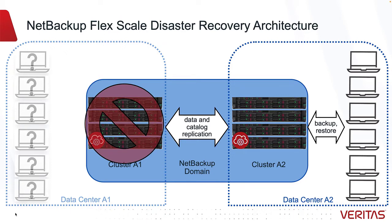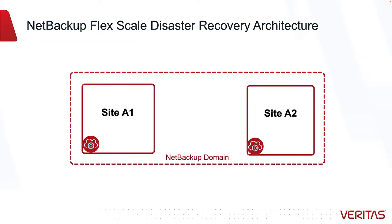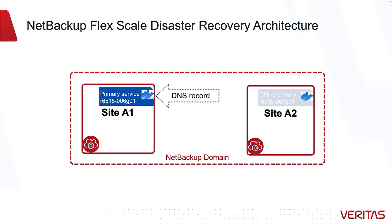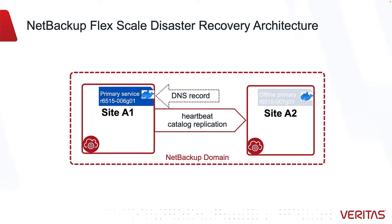Just as with scaling out a cluster or balancing client traffic between nodes, the disaster recovery process is automated by NetBackup FlexScale. For our demonstration, we have a single NetBackup domain that exists across two sites. These two sites share a primary service instance to coordinate the job queue, media services, and clients. NetBackup FlexScale is going to replicate that primary service catalog data to the other site in the background so that it's ready for takeover.